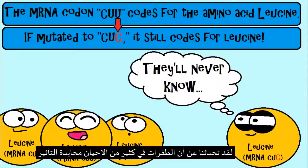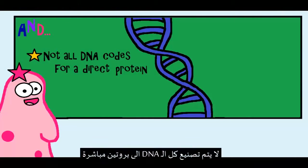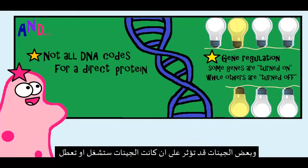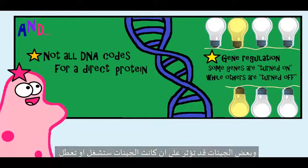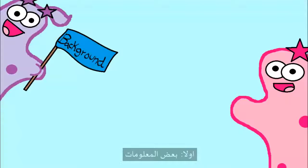Let's talk about some real-life examples of mutations. Remember, we said that a lot of times mutations can have a neutral effect. Not all of your DNA codes for a direct protein, and other genes in your body can even influence whether those genes are going to be turned on or turned off.